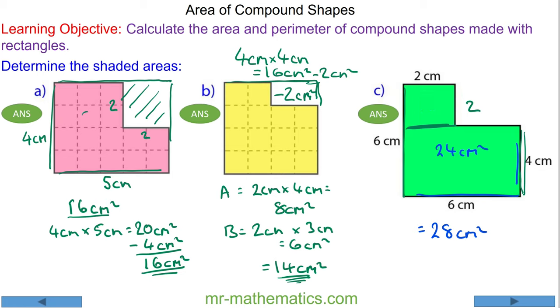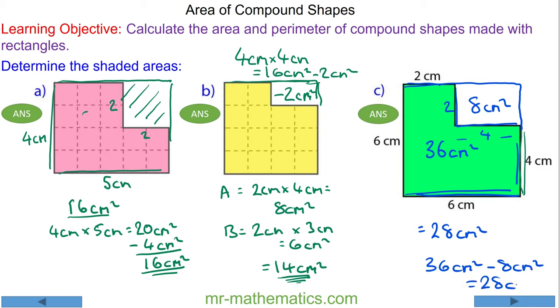Again, we can see it as the difference of two rectangles. So we have the biggest rectangle, which in this case is a square of 6 by 6. Take away the rectangle in the corner, which we know is 2 by 4. Because this is 2 and this is 6, so this must be 4, which is 8cm squared. So we have 36cm squared minus the 8cm squared, which again is 28cm squared.